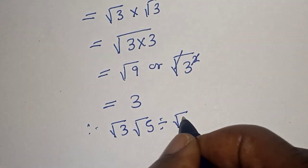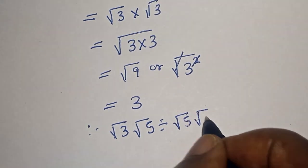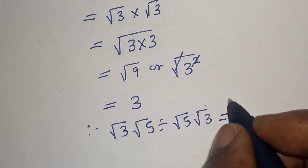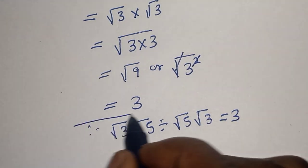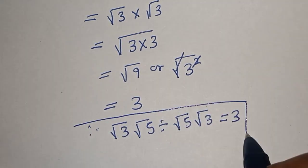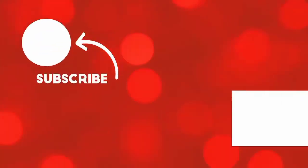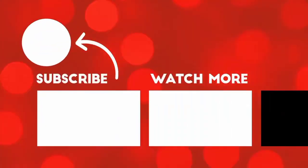Therefore, square root of 3 times square root of 5, divided by square root of 5 times square root of 3, is equal to 3. Before you leave, like, share, comment and subscribe. Thank you, bye bye.